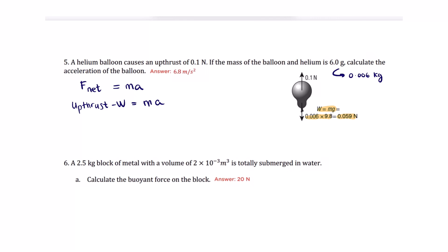Let's substitute the values now. So the upthrust is 0.1 Newton. Minus the weight of the balloon, which is equal to MG or 0.059 Newtons. Let's substitute that: 0.059 Newtons equals the mass of the balloon.